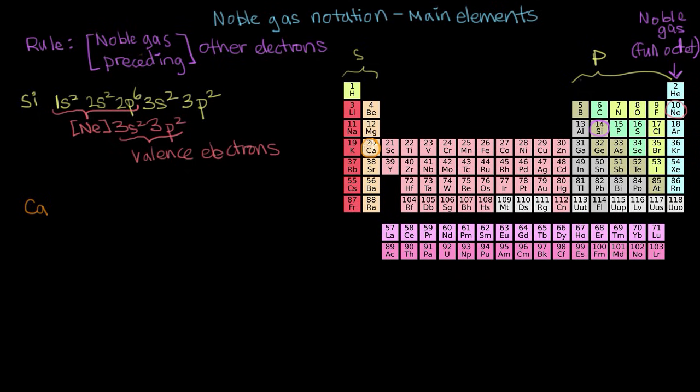So calcium, the noble gas immediately preceding it, we go up a row and then over, and we see that the noble gas is argon. So we write argon in our brackets, and then what electrons are not in argon? So we move down, and we see that we have our 4s electrons, and we have 2 of them. So this is the noble gas configuration for calcium.